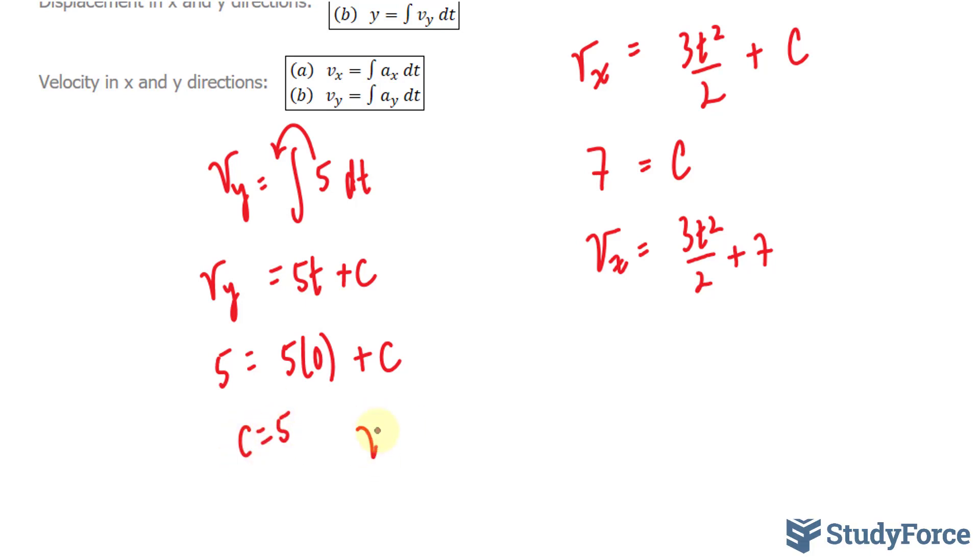5 times 0 plus c gives us a c value of 5. Our equation, therefore, is v_y equals 5t plus 5.